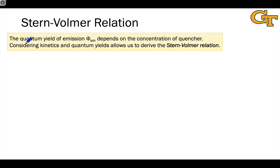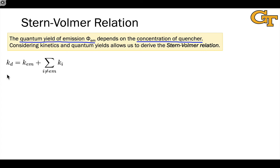From here, we think about the quantum yield of emission — in this case fluorescence — as a function of the concentration of quencher. We define a rate constant Kd, the total rate constant of decay or deactivation of our excited state. It is the sum of the rate constant for emission plus the rate constant for all non-radiative decay processes. Kd refers only to unimolecular decay mechanisms, so we are explicitly excluding quenching from this Kd value.